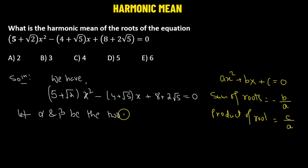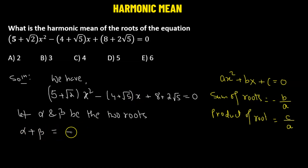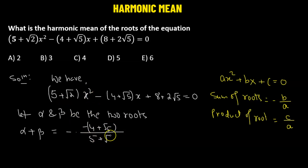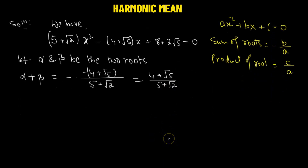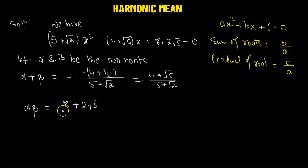Let alpha and beta be the two roots of the quadratic equation. Then the sum of roots, alpha plus beta, equals negative of (4 + √5) divided by (5 + √2), which gives us (4 + √5) over (5 + √2). The product of roots, alpha times beta, is (8 + 2√5) divided by (5 + √2).